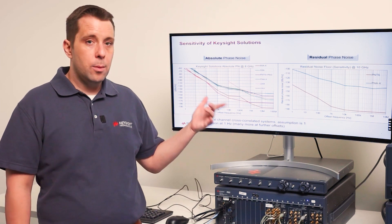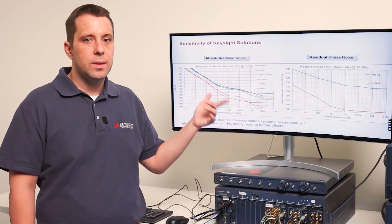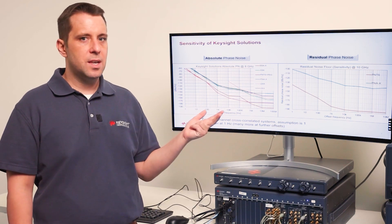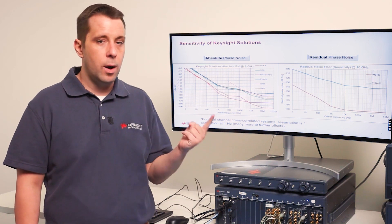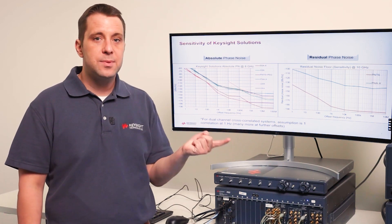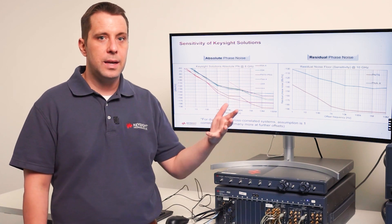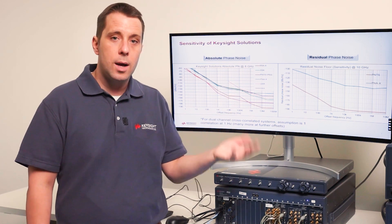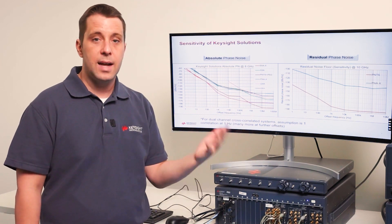We're able to compare the performance of our various solutions in our portfolio by looking at what's called a sensitivity chart. There are two types of sensitivity charts depending on the type of phase noise measurement that you're making. The first one and the most common one is an absolute phase noise sensitivity chart. Absolute phase noise measurements are making measurements of things like oscillators or synthesizers, signal generators, things of that sort.